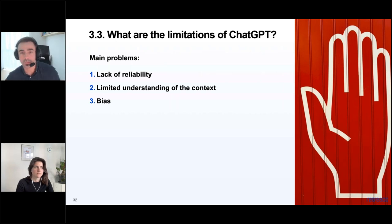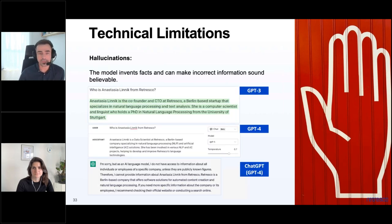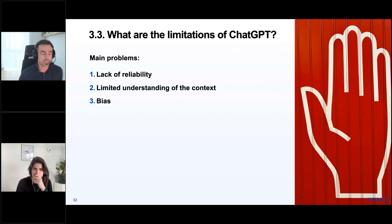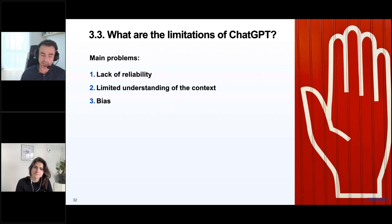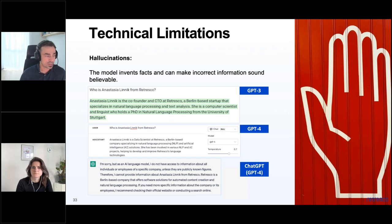What are the limitations of ChatGPT? The main problem is lack of reliability — you cannot trust these models 100% to always produce the output you expect. They are non-deterministic. Even with tricks to make them more deterministic, these models can hallucinate and just make up information — and they sound very convincing even when wrong. This is a fundamental problem with how these models are trained and how the architecture works. OpenAI is working to decrease hallucinations, and there are prompting techniques to reduce them.